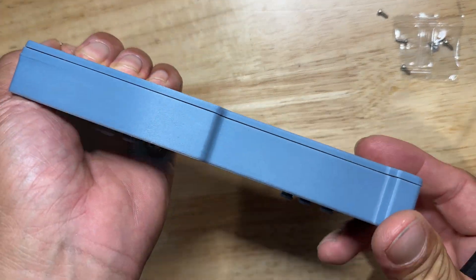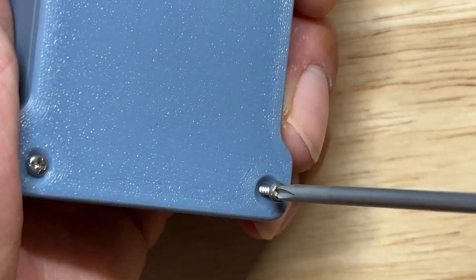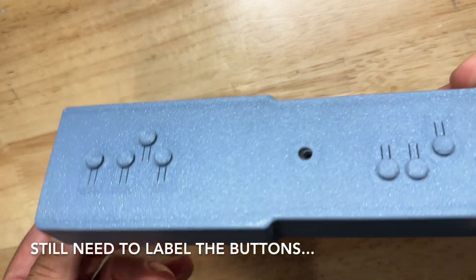All that's left now is to put the rear cover on. It attaches with six screws and there you have it, the remote control combiner.